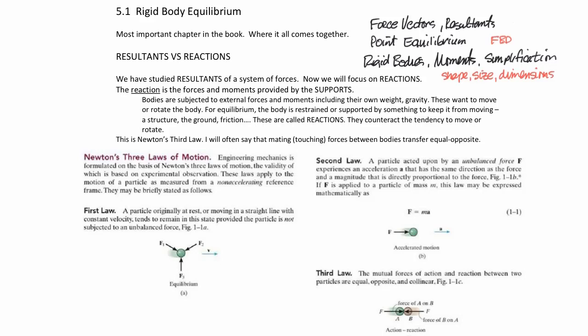We are now going to start Chapter 5, Rigid Body Equilibrium. This is the most important chapter in the book, in my opinion. This is where it all comes together. What we've done up until now is develop a set of tools that we can use to analyze things, and now we're going to use those tools to analyze rigid bodies.